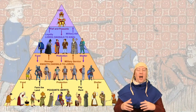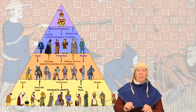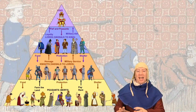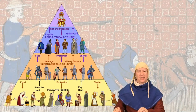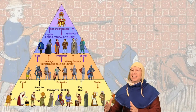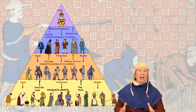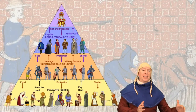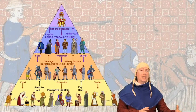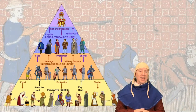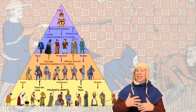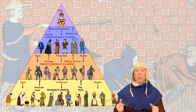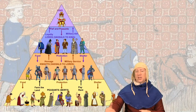Serfs are not necessarily enslaved, but they are tied to the land. Generally speaking, they're tied to the land, they can't necessarily leave, they can't go somewhere else. It's very, very difficult for them to change their station, both socially and economically. This pyramid represents a very broad view of what is feudalism — it is a social and political system.